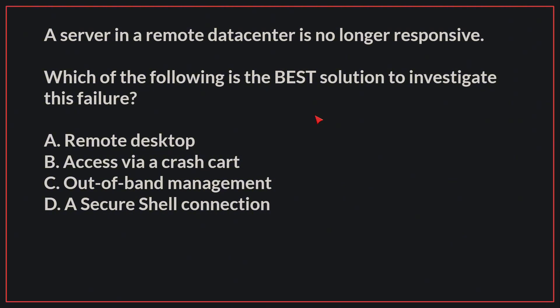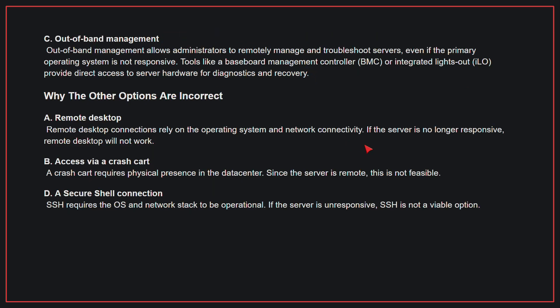A server in a remote data center is no longer responsive. Which of the following is the best solution to investigate this failure? The correct answer is C: Out-of-band management. Out-of-band management allows administrators to remotely manage and troubleshoot servers, even if the primary operating system is not responsive. Tools like a baseboard management controller or integrated lights-out provide direct access to the server hardware for diagnostics and recovery.